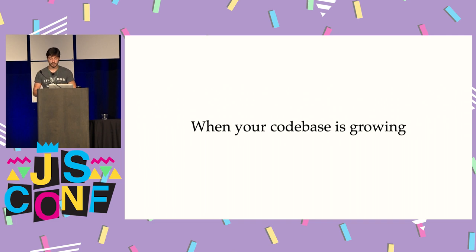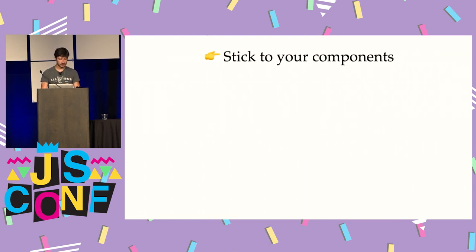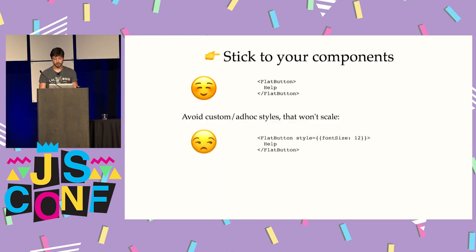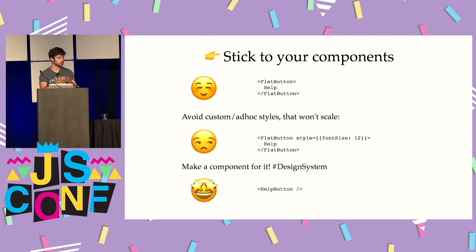Sometimes you're reaching a point where your code base is growing a lot. A few tips on this: in my case as it's an open source project, I got more and more contributors. The first thing I'd say is to stick to your components. If you have a help button and you want to make it smaller, you might think to just add a different font size. What I'd recommend instead is to make the help button a separate component — basically create components for as many things as possible. In other words, make a design system and try to stick to it, because once you've done this it will be much faster to build new screens and keep them consistent.